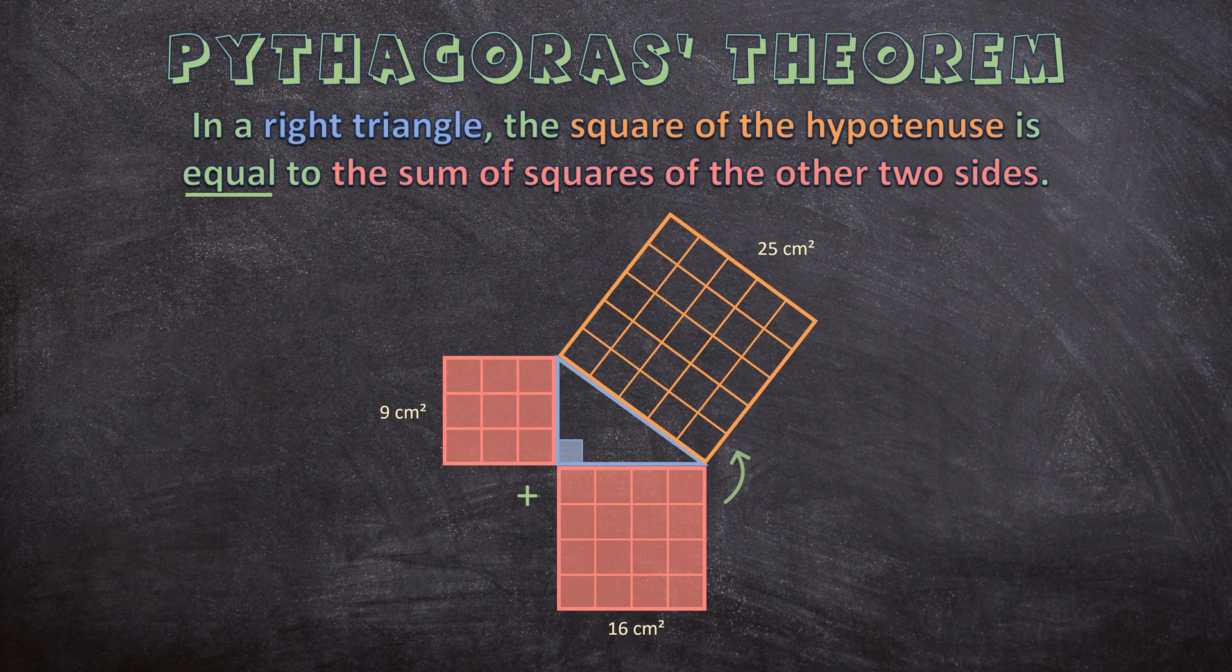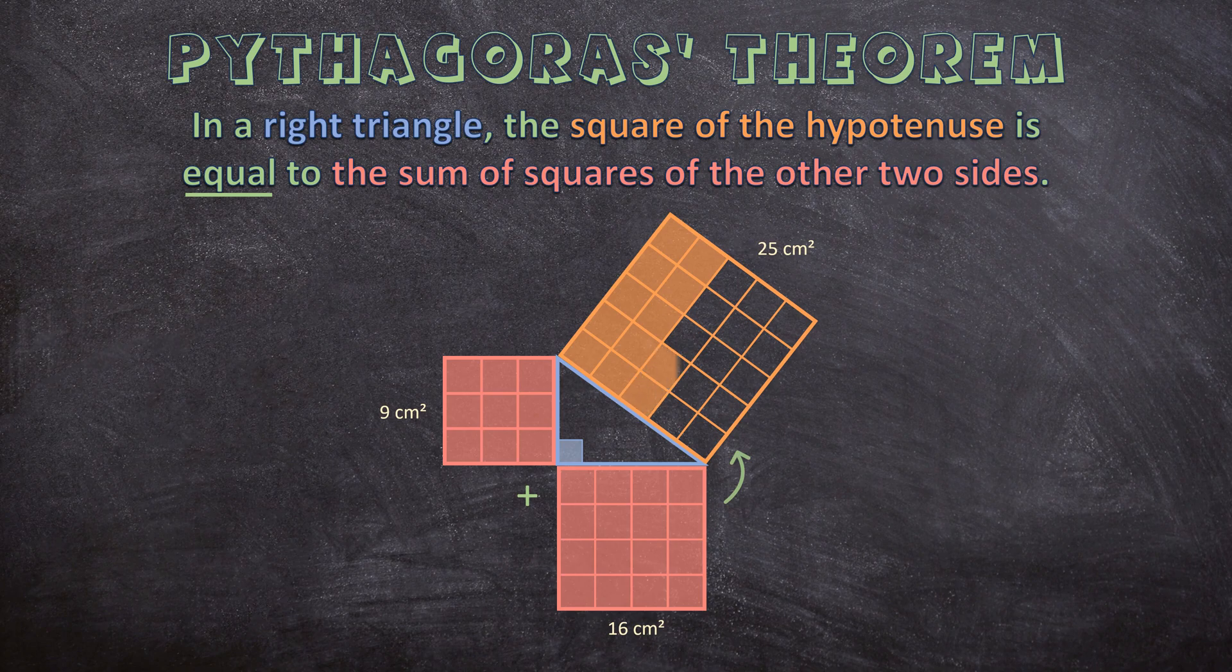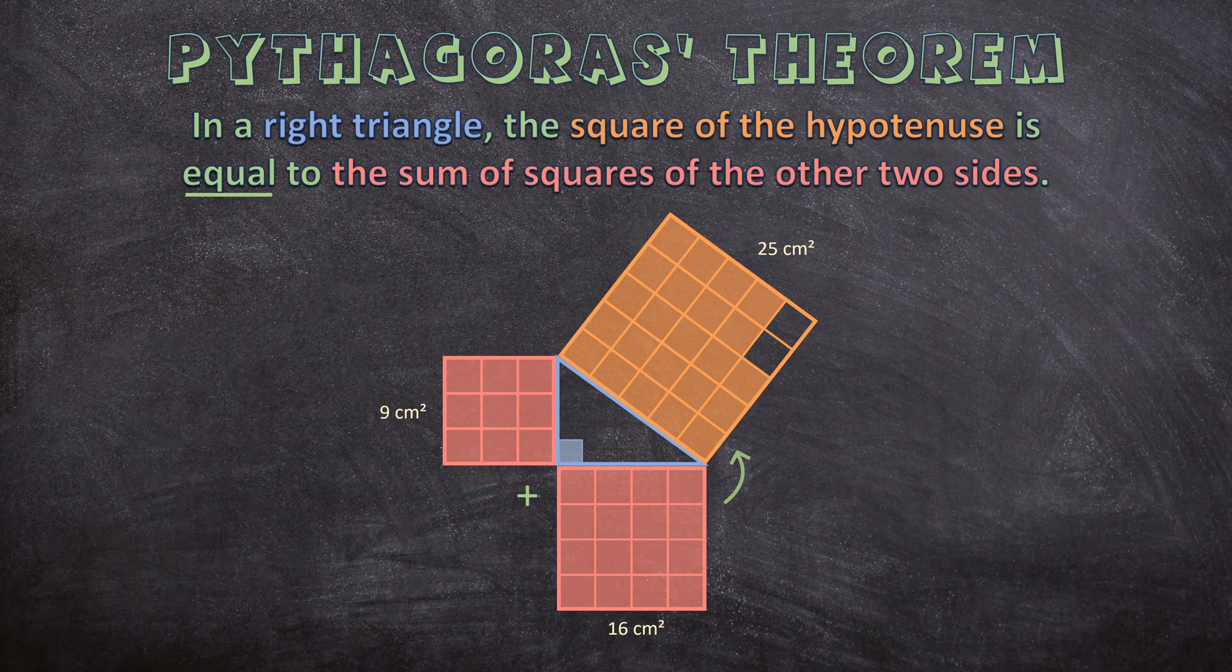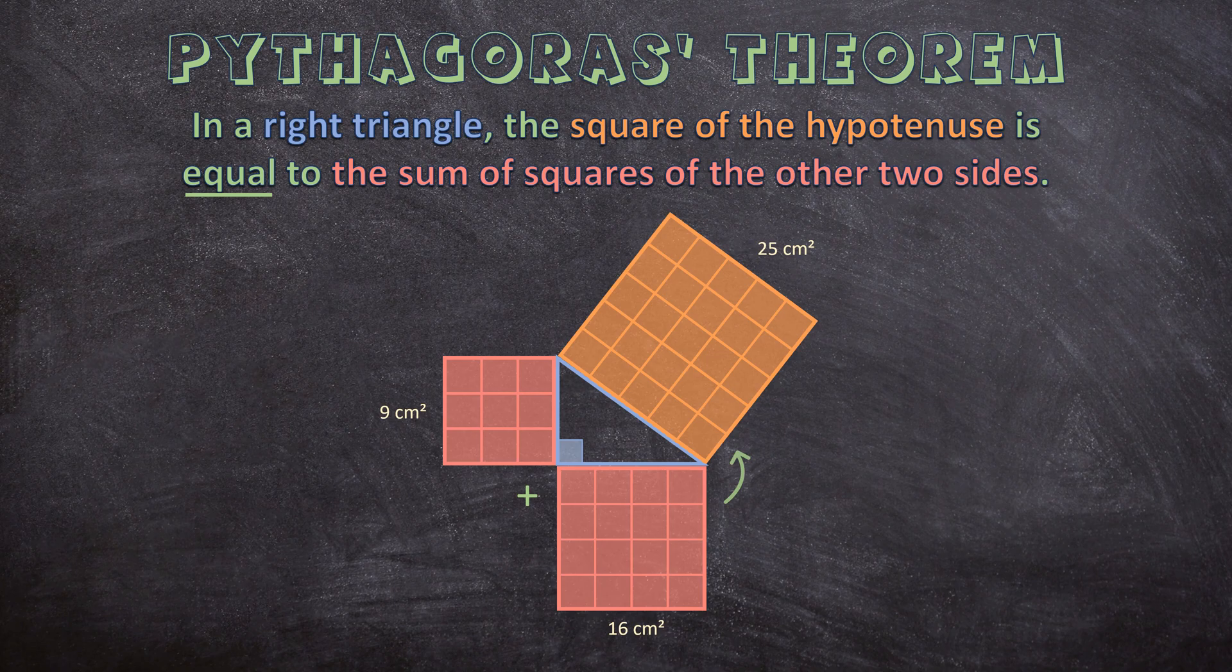This square is 1, 2, 3, 4, 5, 6, 7, 8, 9, 10, 11, 12, 13, 14, 15, 16, 17, 18, 19, 20, 21, 22, 23, 24, 25 centimeters square. So this is true. So this is a visualization of Pythagoras theorem.